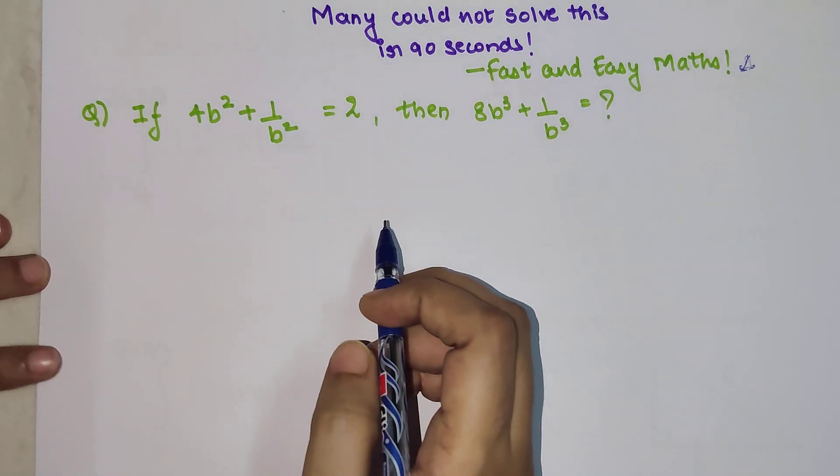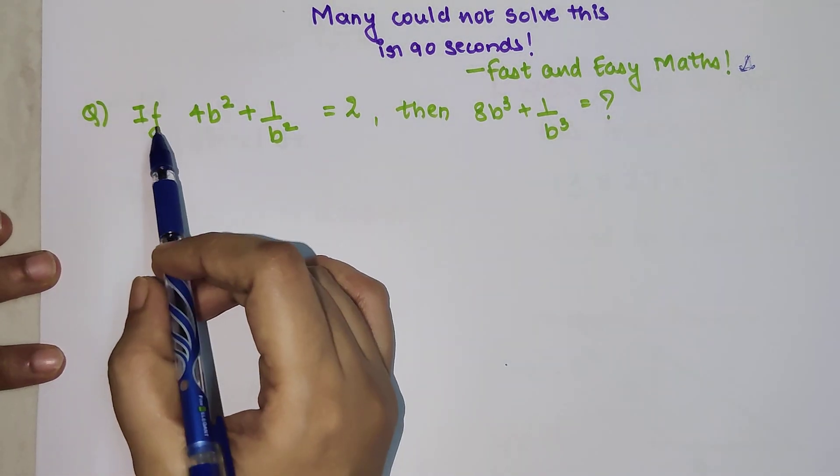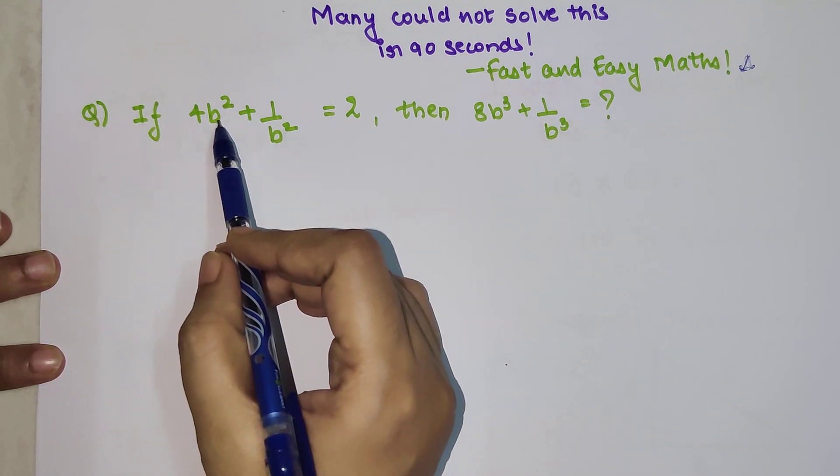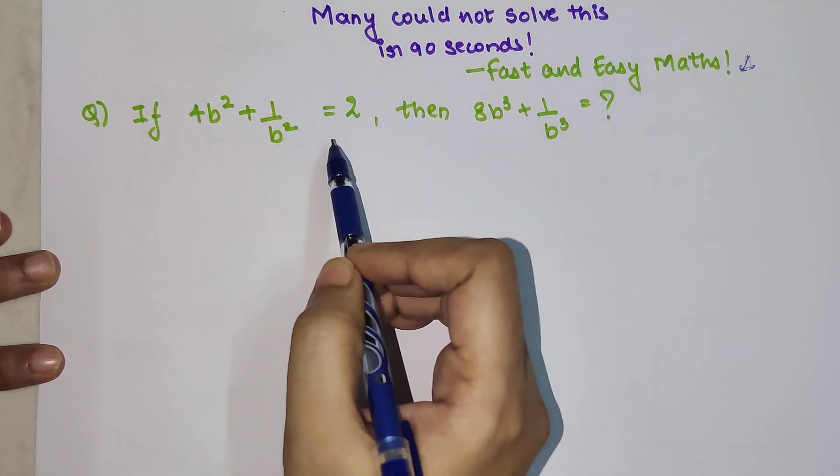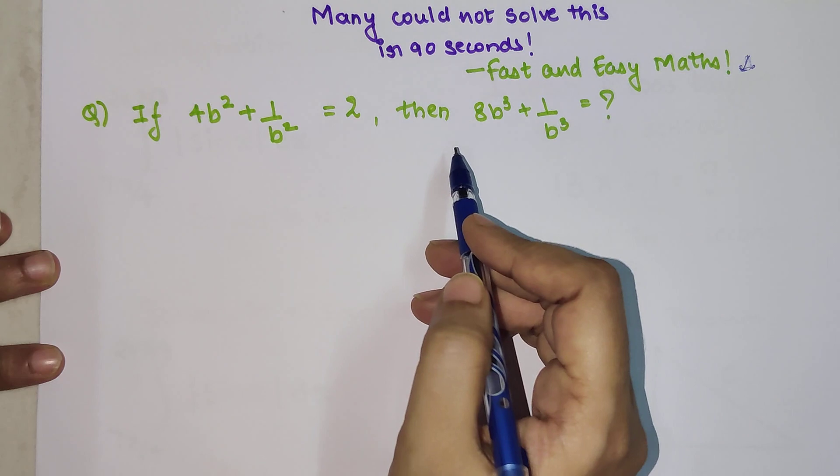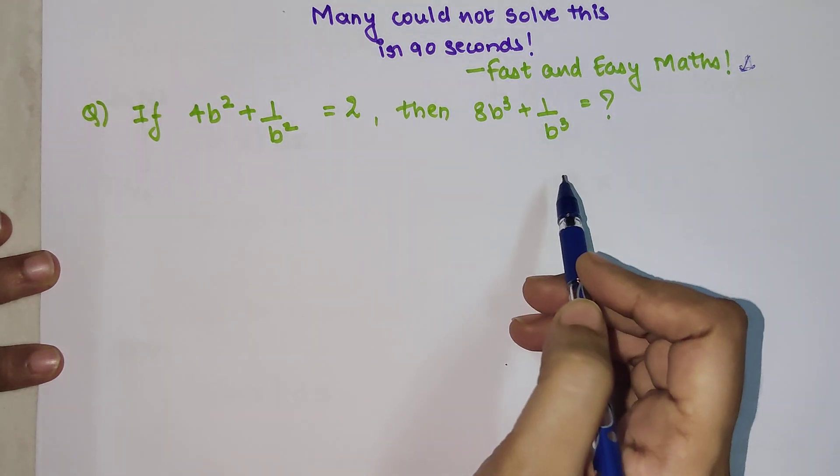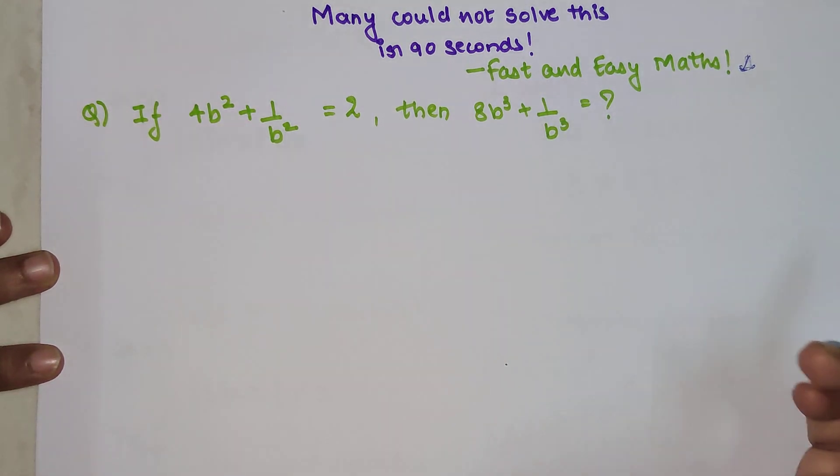Let's see how to solve this kind of question. The question says if 4b² + 1/b² = 2, then 8b³ + 1/b³ will be equal to what?